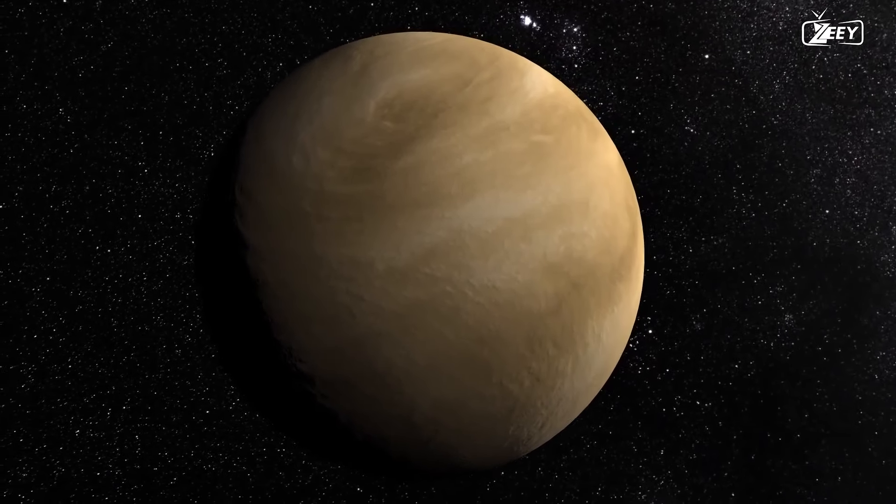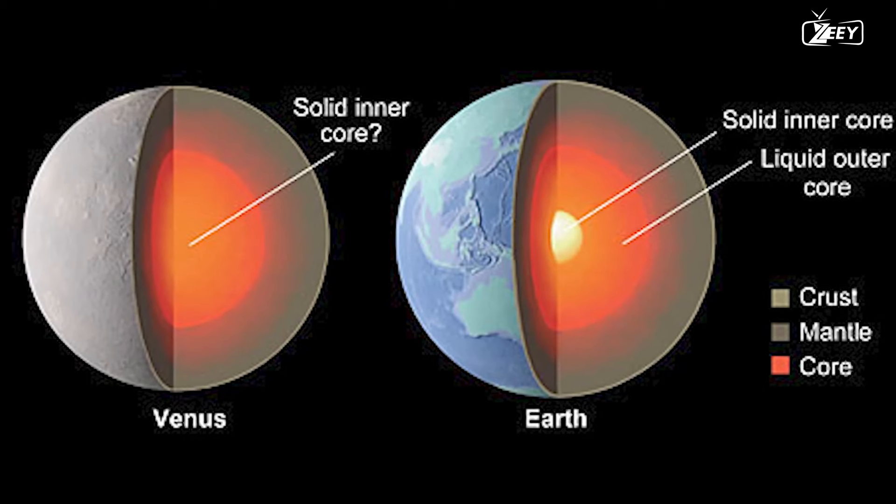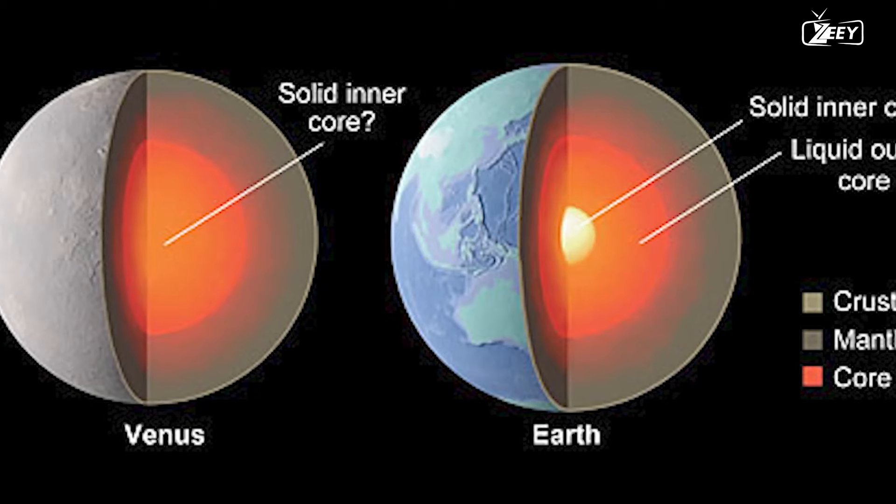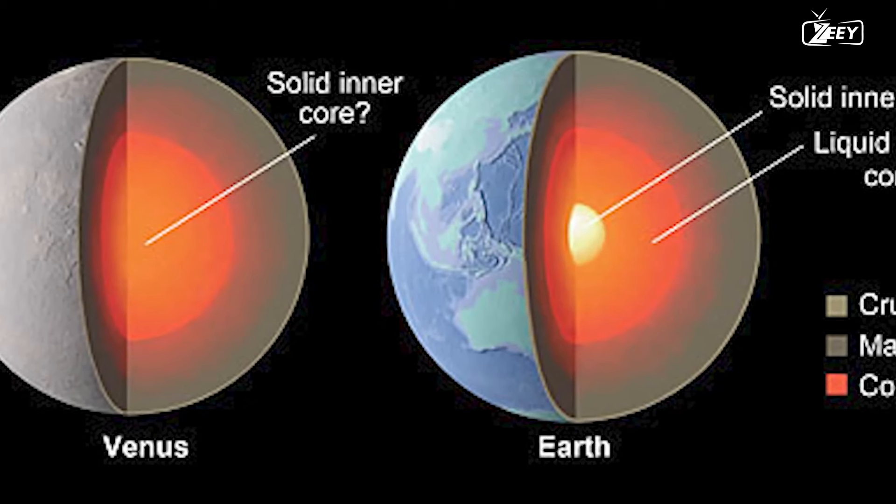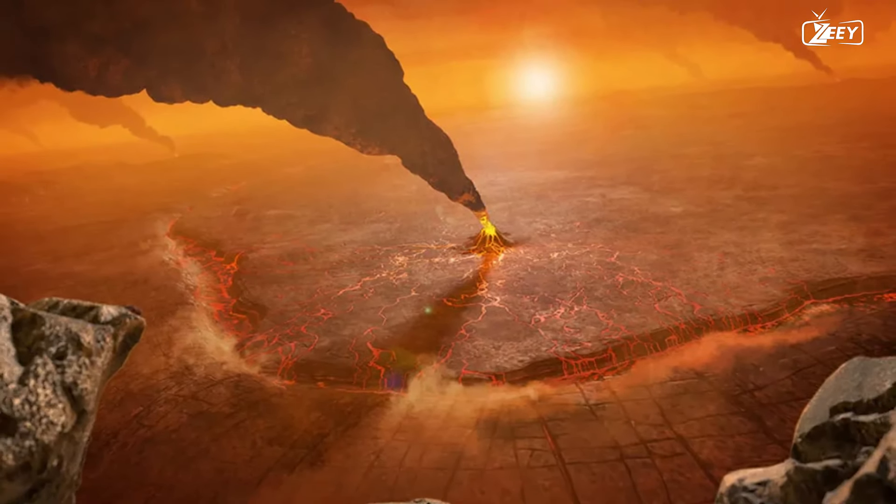Venus, on the other hand, lacks plate tectonics. Its crust is substantially thicker than Earth's, preventing the lithosphere from moving. As a result, heat and pressure from the mantle are not released as efficiently, potentially leading to disastrous volcanic eruptions.